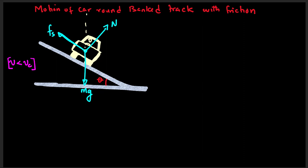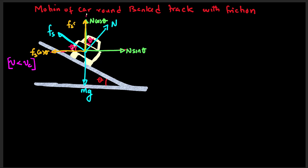This angle is θ, this angle is also θ, and this angle is also θ. We can resolve both the friction force and the normal force into components. For the normal force: N·sinθ and N·cosθ. For the friction force: fs·cosθ and fs·sinθ.